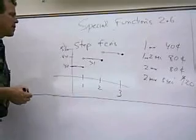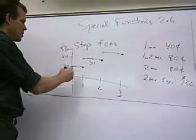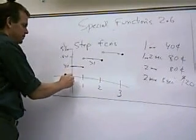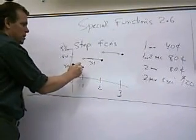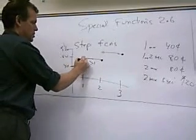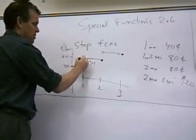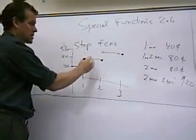And that's called a step function, because when you graph it, it looks like a flight of steps. You'll notice here, first minute from zero to one, 40 cents. And then as soon as I hit two, one second after one minute, I start being charged 80 cents.